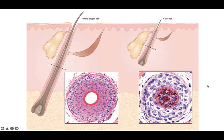Androgenetic alopecia often shows an increase in miniaturization of follicles — it's not a scarring alopecia, but the scalp appears bald due to the number of vellus hair follicles present. You can see tiny little hairs on the scalp. The vellus hair follicle is essentially a miniaturized version of the terminal anagen hair follicle.